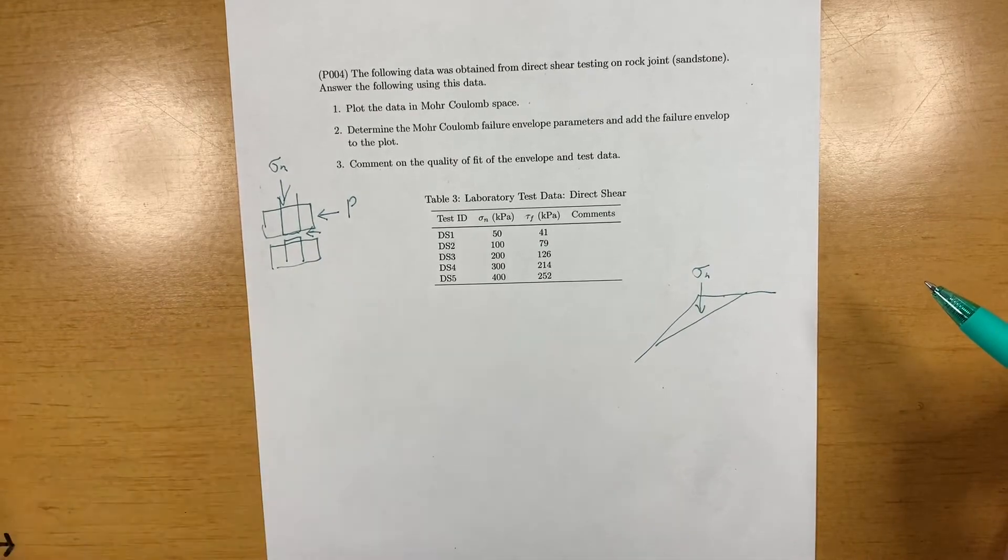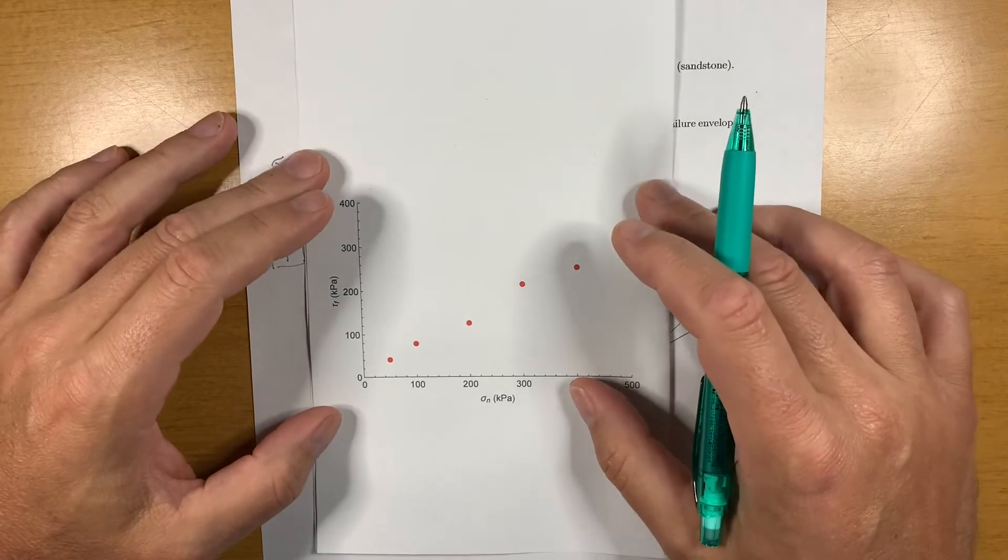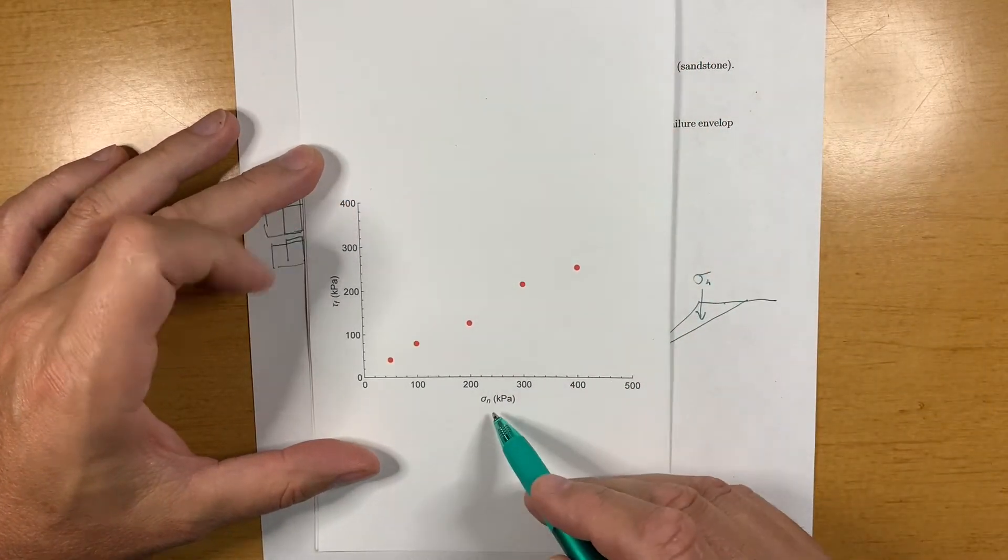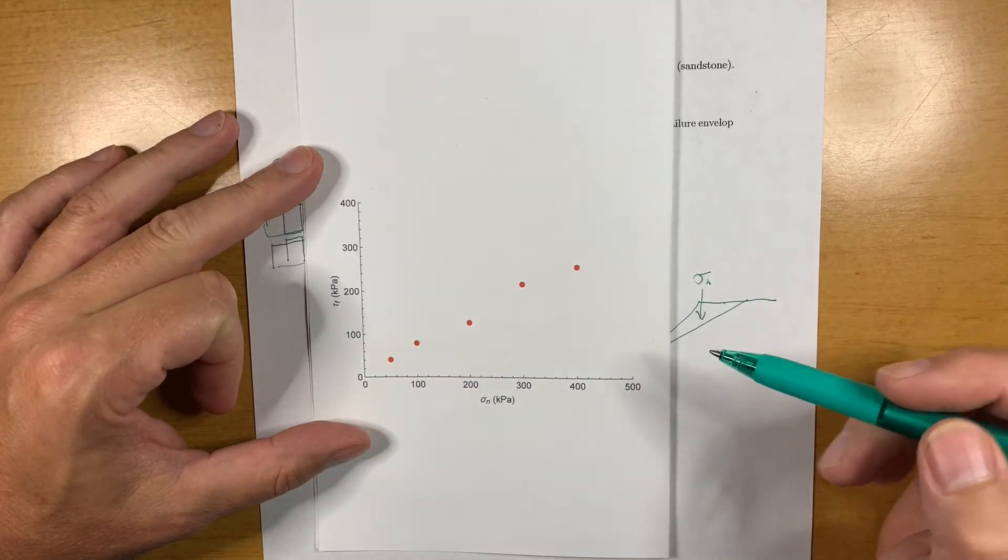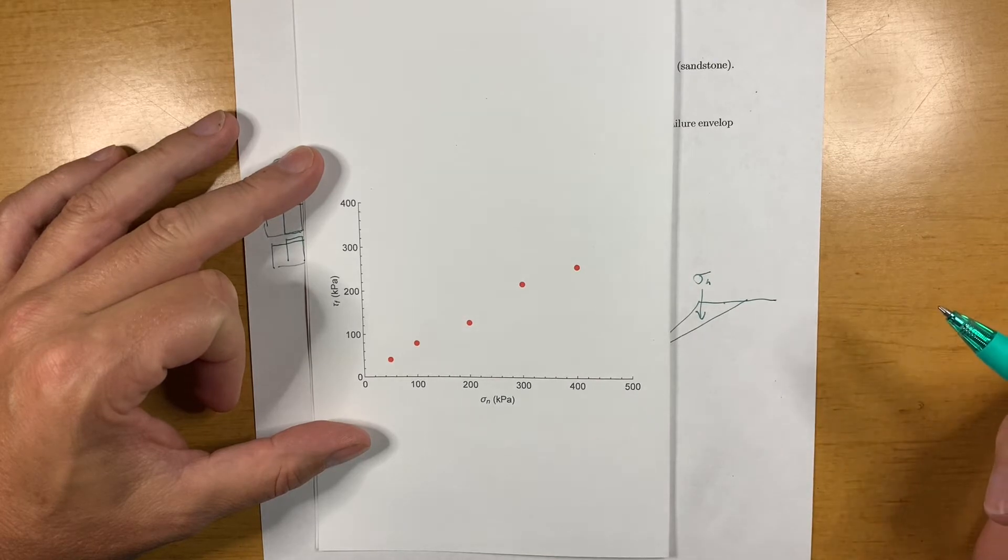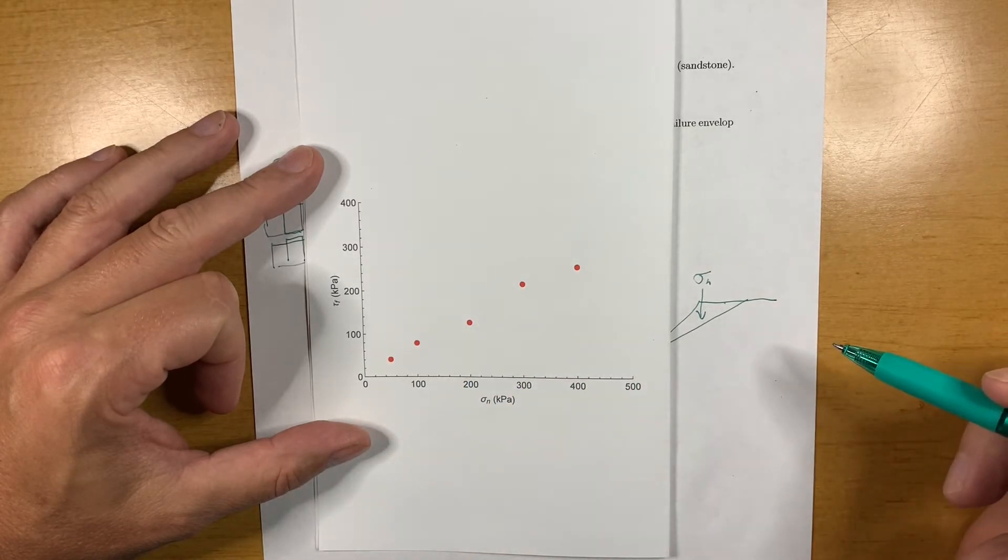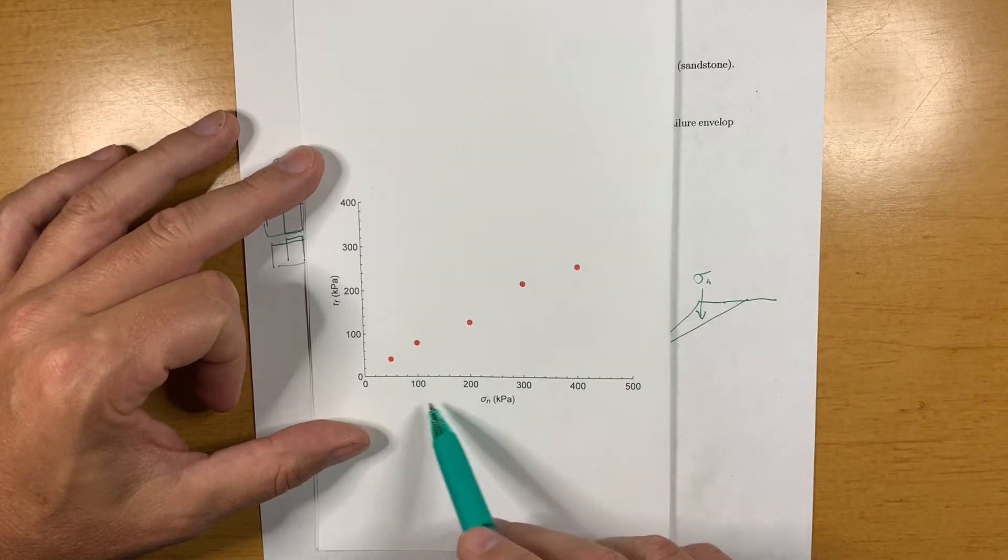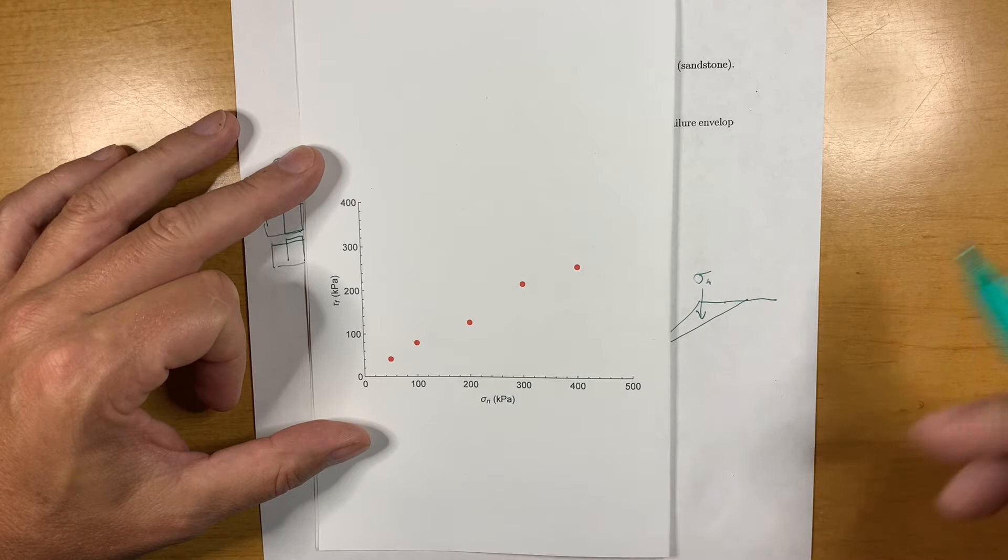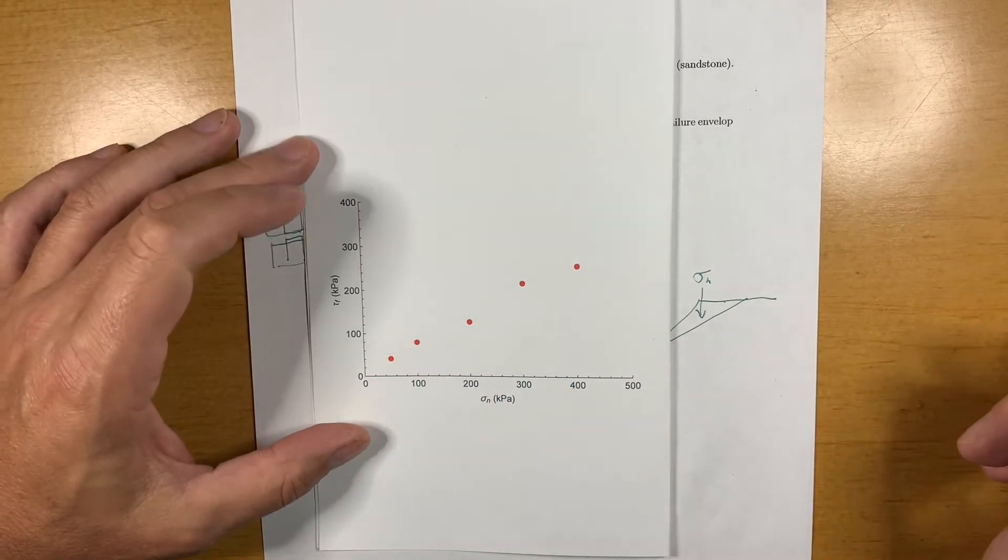So first off, we are going to plot up our data here. This is in classic Mohr-Coulomb space, sigma n normal stresses and tau at failure or sometimes people just use sigma in here and you can plot Mohr circles and so on. But these are the failure points from our data set. So we have normal stresses of 50, 100, 200, 300 and 400 kPa. And these are the failure values.